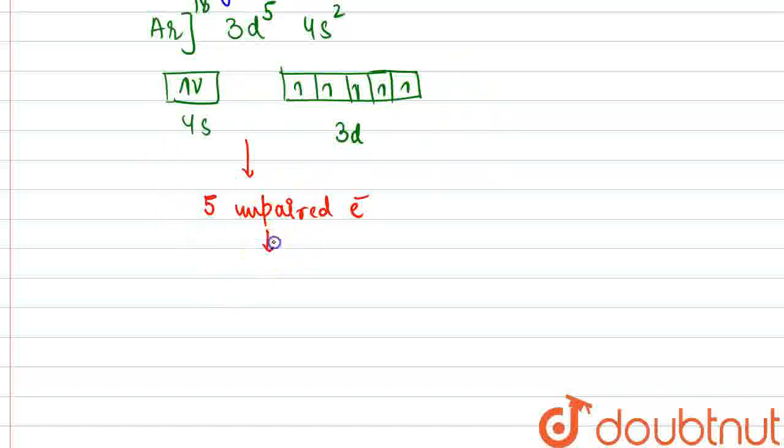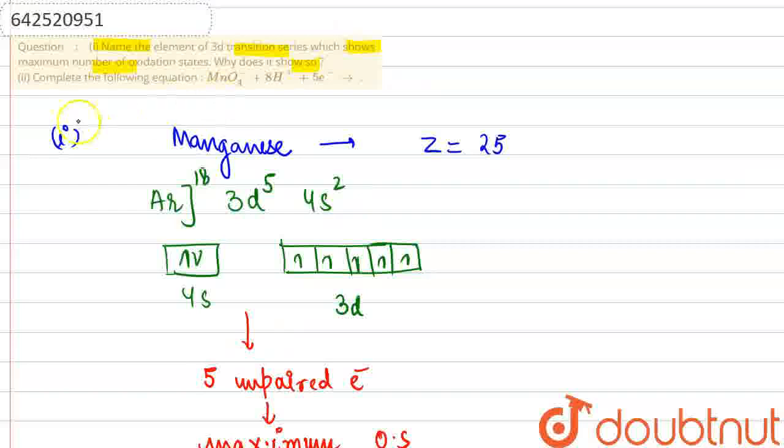So, that is why, because of the maximum number of unpaired electrons, it would be exhibiting maximum oxidation state up to 7. So it can just rise up to plus 7 oxidation state. So that answers the first part.